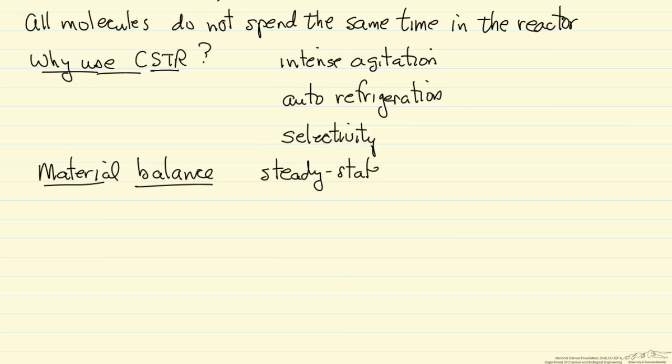That means we have an accumulation term that's zero. We have flow into the reactor, so I'll use F for molar flow rate. So the molar flow rate of R entering the reactor, and then the molar flow rate of R leaving the reactor. And then some rate of reaction of R times volume. This molar flow rate would be the volumetric flow rate entering times the concentration of R entering the reactor.